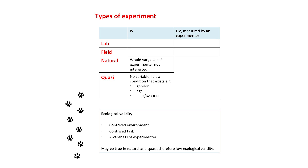A quasi-experiment involves a variable that hasn't been manipulated by anyone — it's simply something that exists. So gender is an example: you are a boy or a girl, and no one brought about that change. It's those 'differences studies' that Hugh Coolican calls quasi-experiments — gender, age, or indeed something like depression that no one has changed.